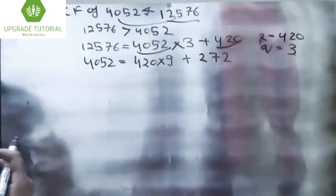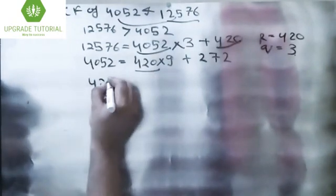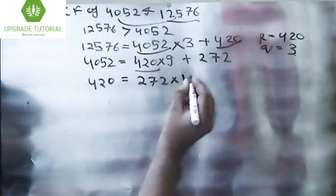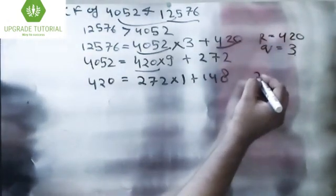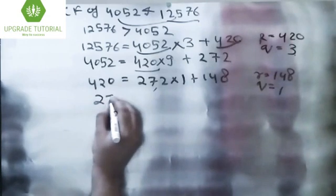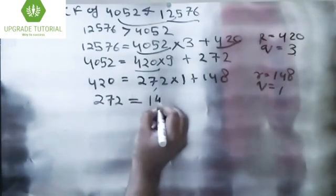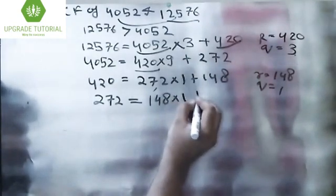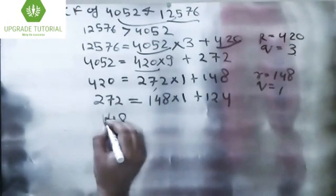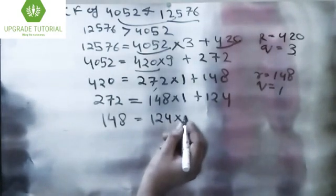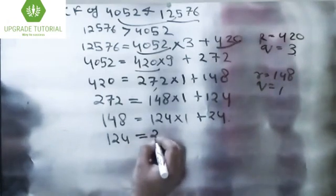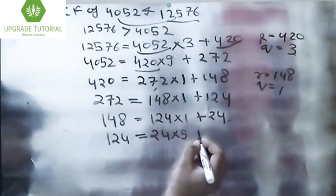So 4052 = 420 × 9 + 272. We repeat this process until the remainder becomes 0. Again, 420 = 272 × 1 + 148. Now r = 148, q = 1. Again 272 = 148 × 1 + 124. Then 148 = 124 × 1 + 24.